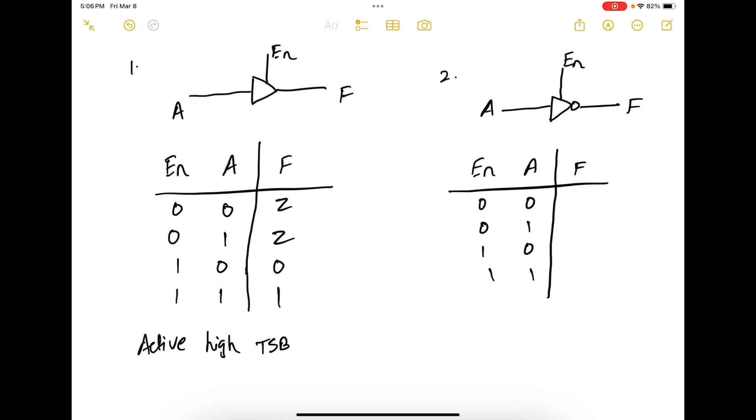Again, when enable is 0, your circuit acts as open circuit, therefore it is a high impedance state. And when enable is 1, F is the NOT of A. So you get 1 here and 0 here.